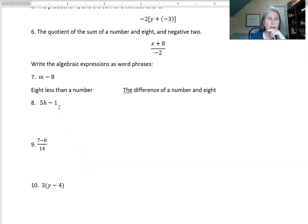What about this one? This is a subtraction so I could say the difference of five times a number and one. That would be perfectly fine. Five times a number and one. What's another way we could say that? The other way we could say that is one less than five times a number, right? Because we're taking one away from five times a number.